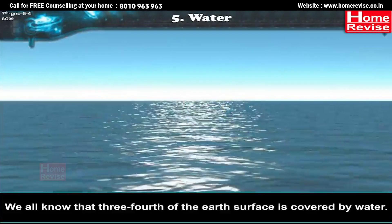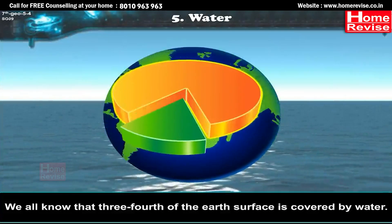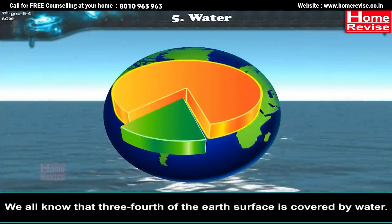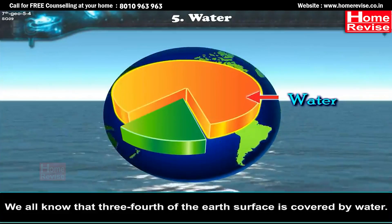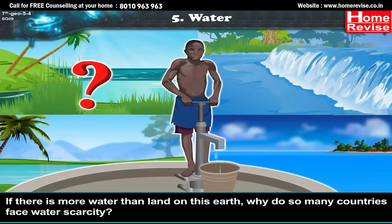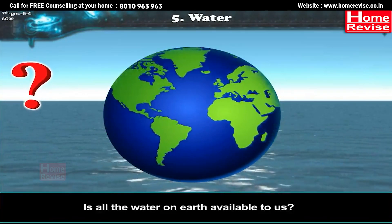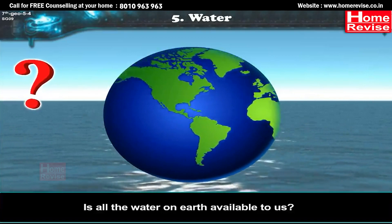We all know that three-fourths of the earth's surface is covered by water. If there is more water than land on this earth, why do so many countries face water scarcity? Is all the water on earth available to us?